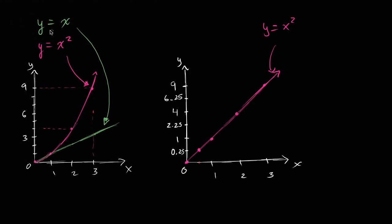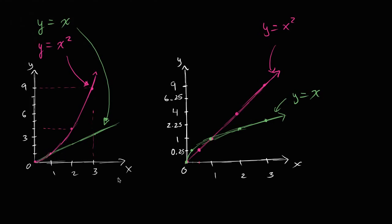What's even more interesting is what happens when I plot y = x on this quadratic scale. When x is 0, y is 0. When x is 0.25, y is 0.25. When x is 1, y is 1. When x is 2, y is 2. When x is 3, y is 3. The graph of y = x on this coordinate plane — where the y-axis is no longer linear — looks like the graph of y = √x. But it's not — this is a linear function. It doesn't look like a line anymore because the y-scale is not linear.